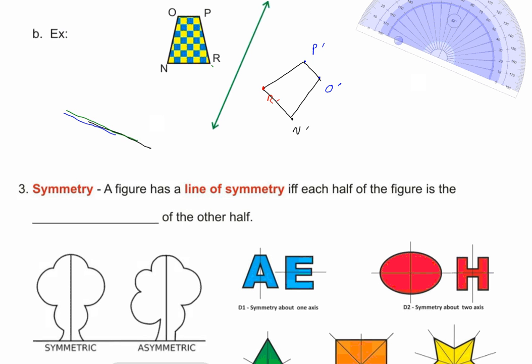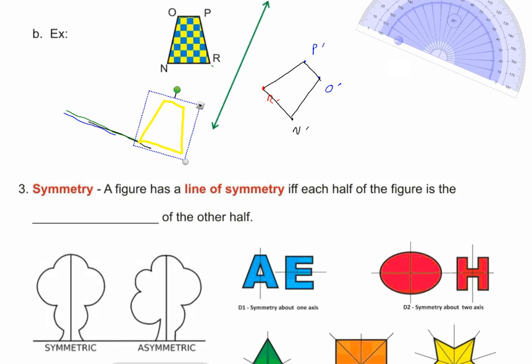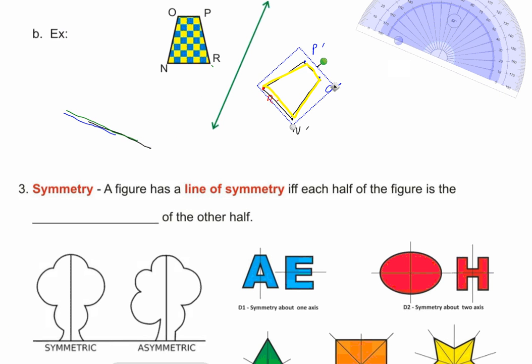Not only did I reflect that shape, I also rotated it. See how it's rotated? On the smartboard I can grab the green dot on top and rotate the shape. When your line of symmetry is at an angle, reflecting will also rotate the shape.